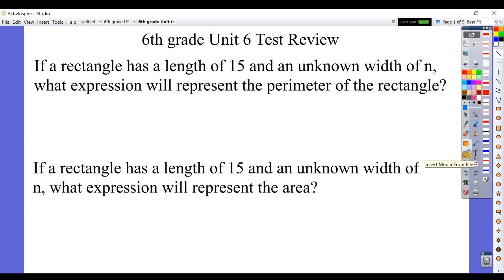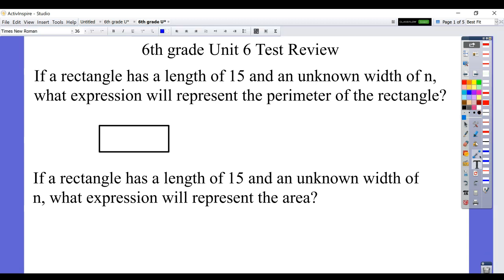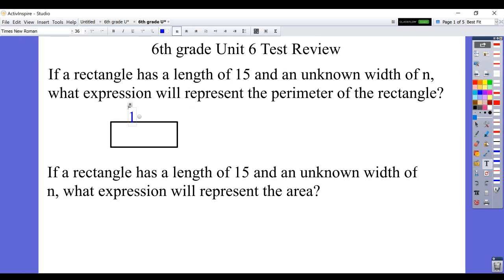So it says if a rectangle has a length of 15 and an unknown width of n, what expression would represent the perimeter of the rectangle? So we're going to create a rectangle to try to make ourselves a sketch. You can use your scratch paper for that. It has a length of 15, and it has an unknown width of n.